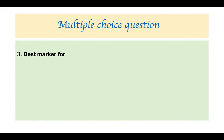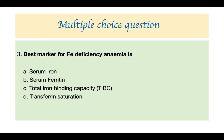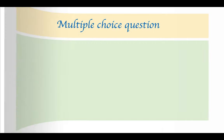The best marker for iron deficiency anemia: serum iron, serum ferritin, total iron-binding capacity, or transferrin saturation? Serum ferritin is the correct answer — it is the best marker. Even though all investigations can be done, serum ferritin is the most reliable.